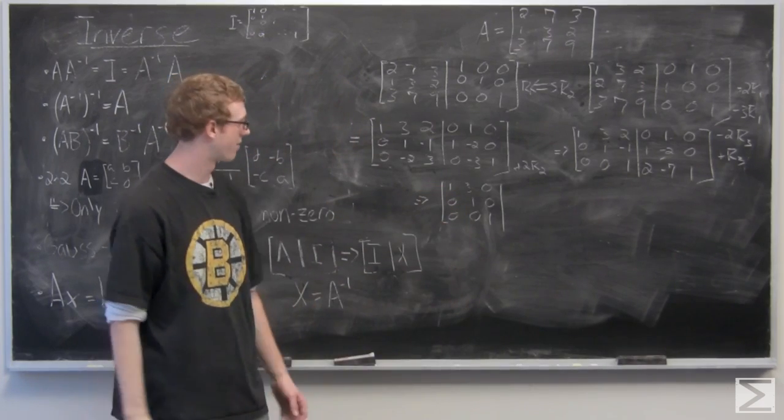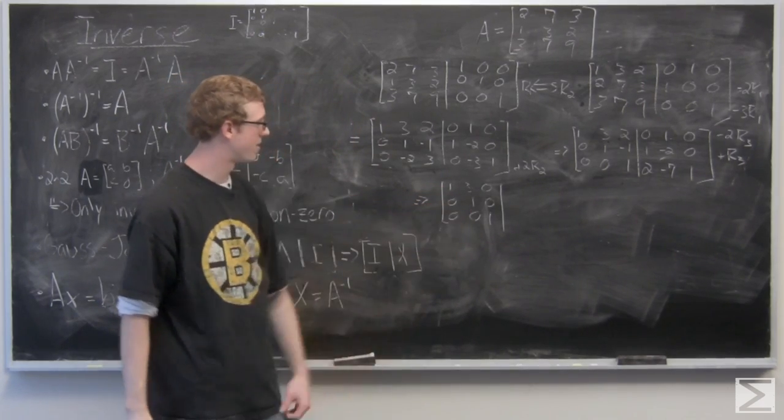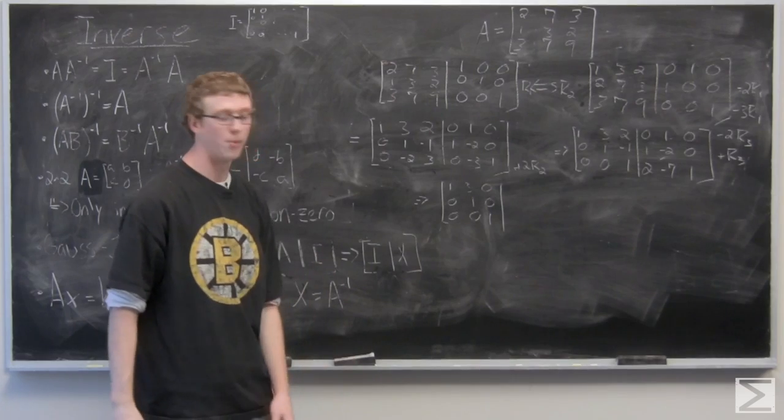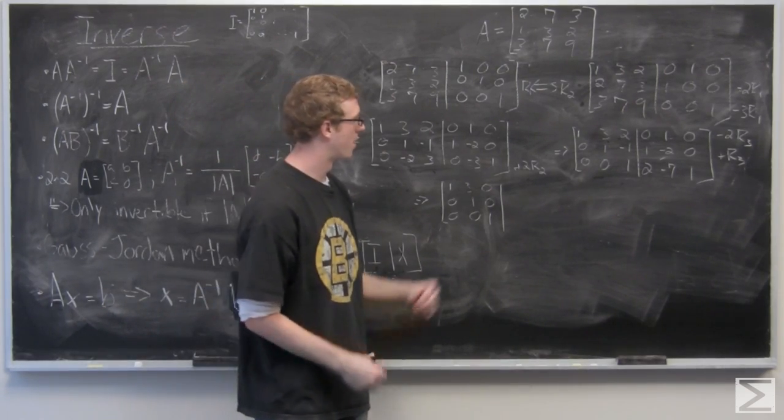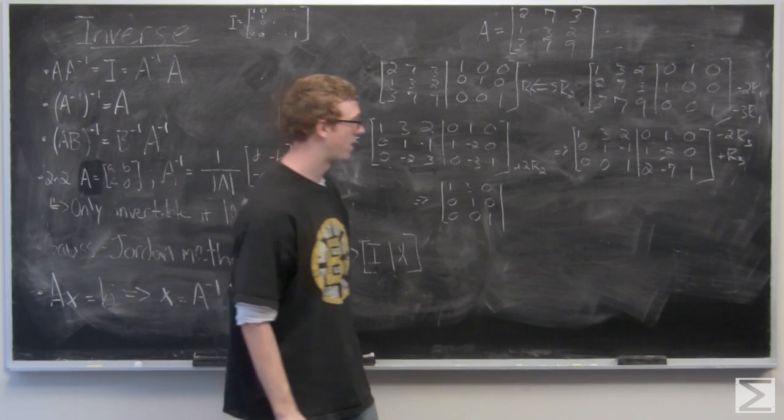So as you can see, we're getting very close to making this the identity matrix. All we're going to have to do is manipulate R1 and R2 a little bit, but let's go ahead and complete writing this matrix.